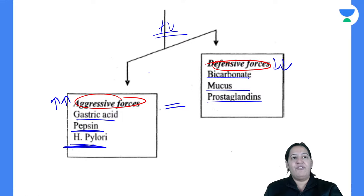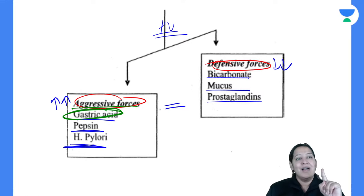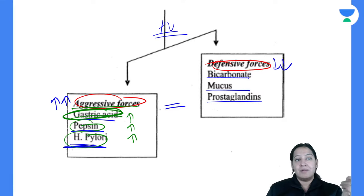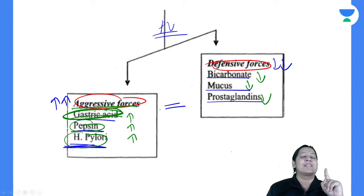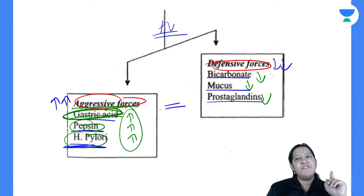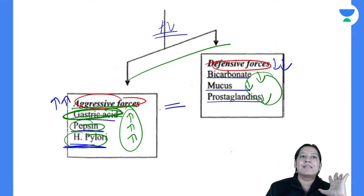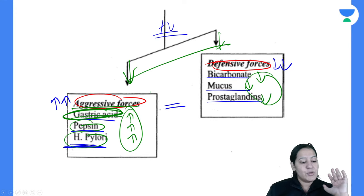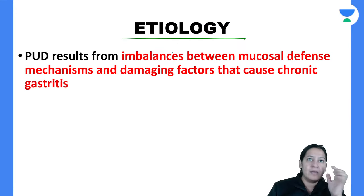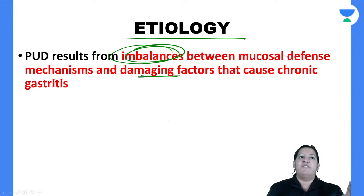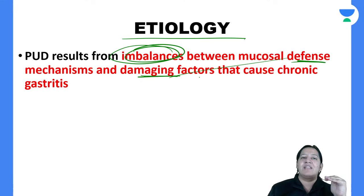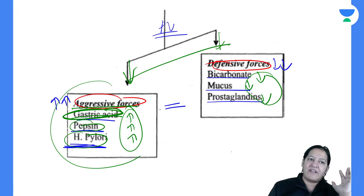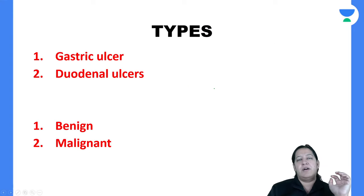Most students have the confusion that peptic ulcer is always due to hyperacidity — no. It may be hyperacidity, hyperpepsin, or H. pylori that increases; that can cause peptic ulcer. But maybe acid is normal and mucosa is less, bicarbonate is less, or prostaglandin is less — that will also lead to peptic ulcer. So aggressive factors increasing or defensive factors decreasing causes imbalance, leading to peptic ulcer. It is the imbalance between aggressive and protective factors.